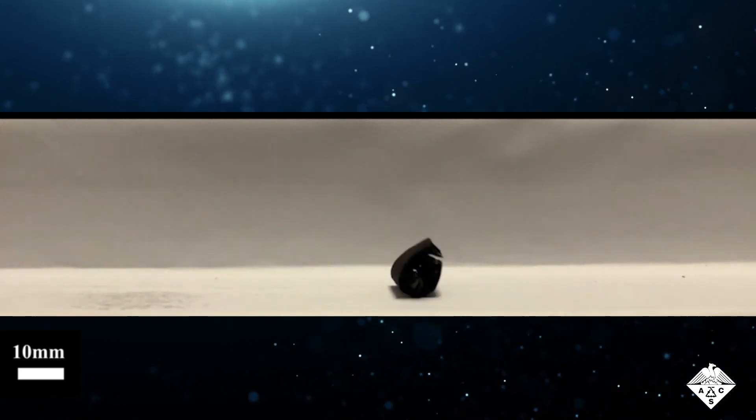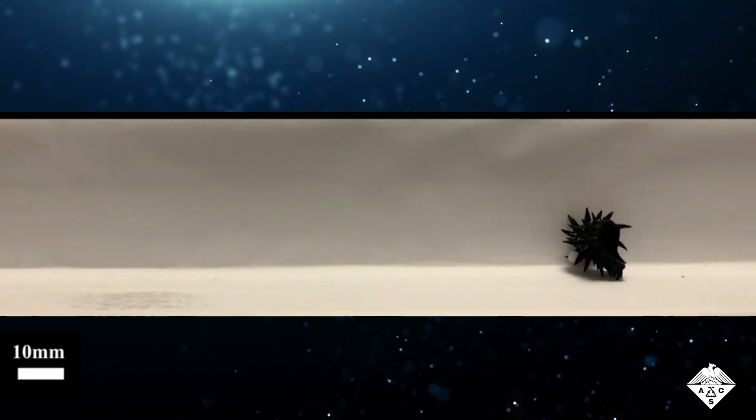Finally, the researchers showed that a millirobot could carry something entirely on its own. Controlled by a magnet, it folded around a small plastic ball, rolled to a new spot, and then dropped off what it was carrying.